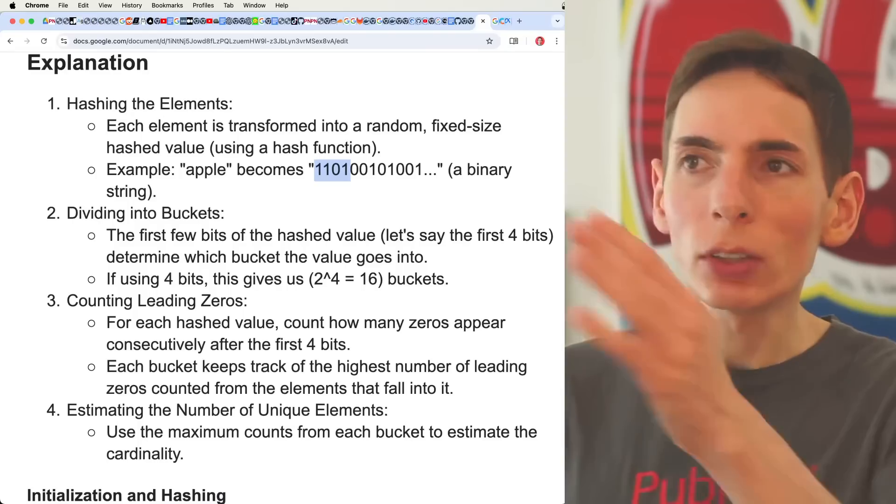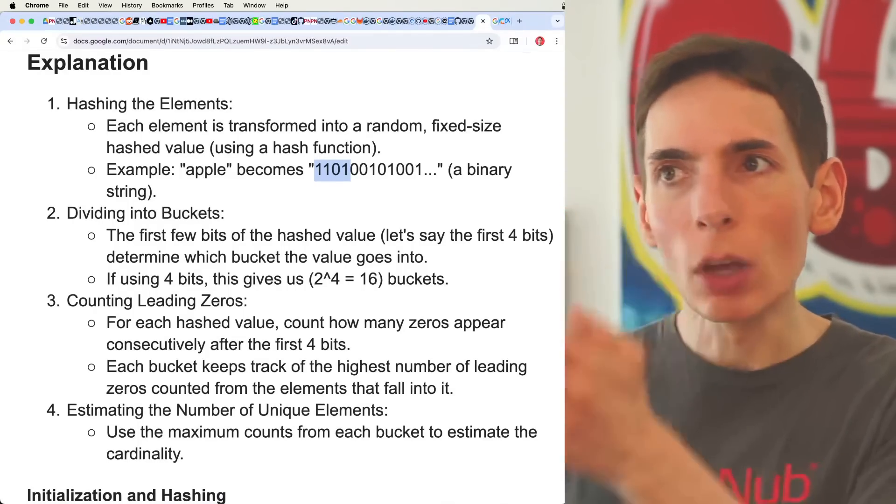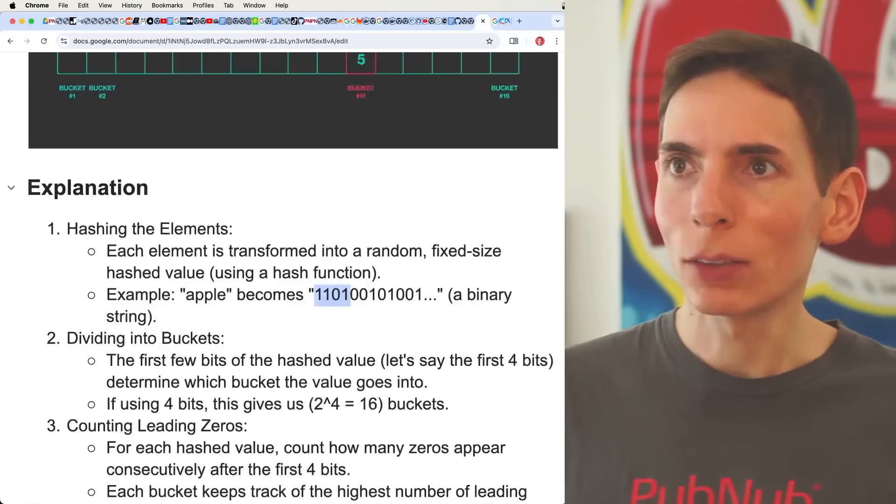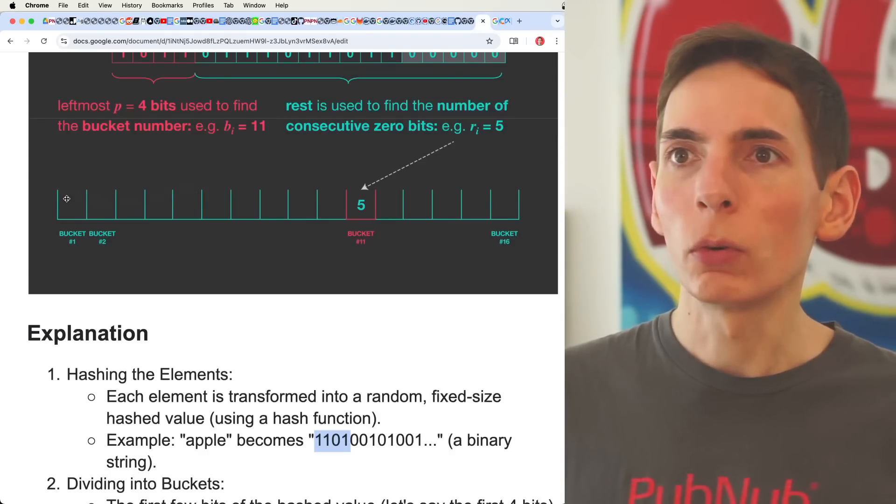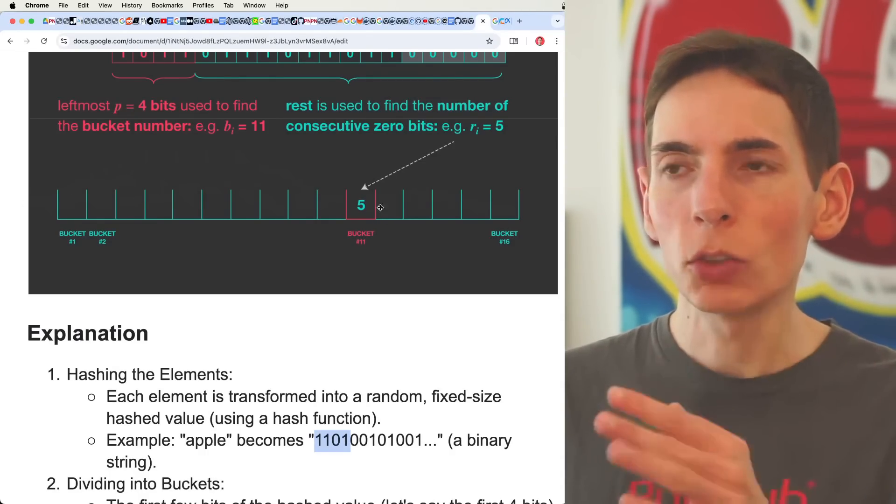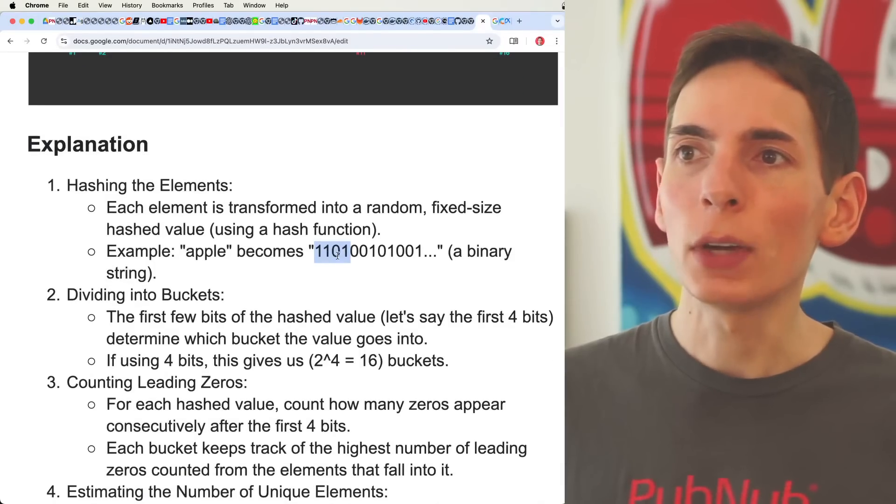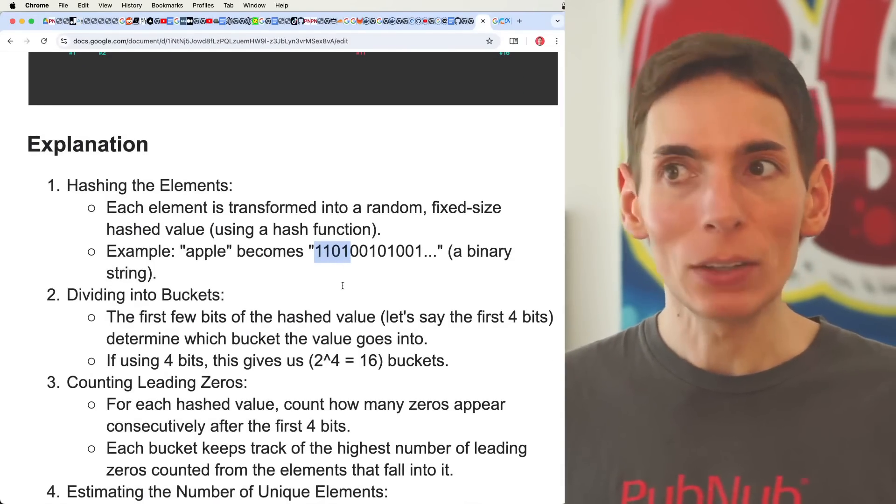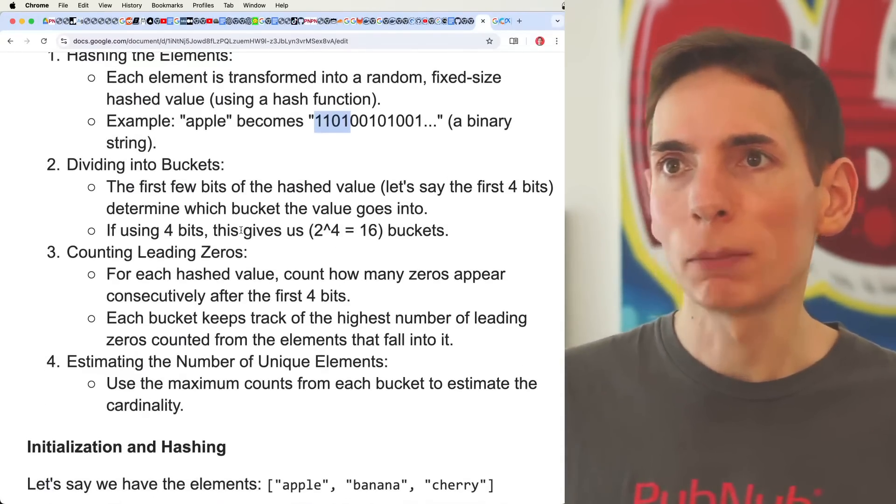So that gives us 16 possibilities where this number would land in the buckets up here. So we've got the number of buckets here, 16 buckets, and we would land in one of these buckets based on the value of the first four bits in the binary string.